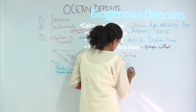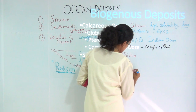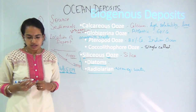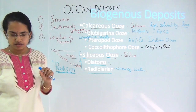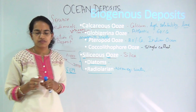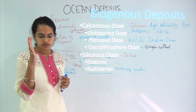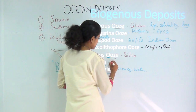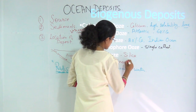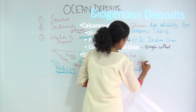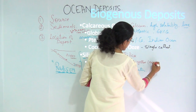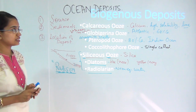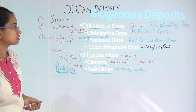The main characteristic of radiolarians is that they are formed in warm equatorial waters. Diatoms, on the other hand, are usually yellow-coloured when they are away from the land, and bluish when they are close to the land. This is the major classification we talk about under biogenous deposits.